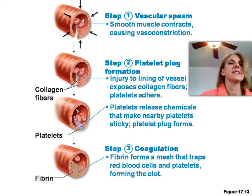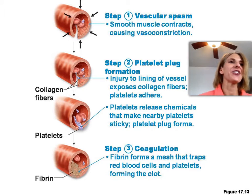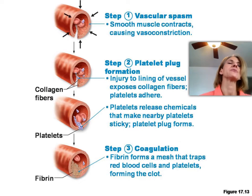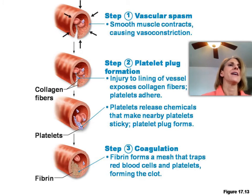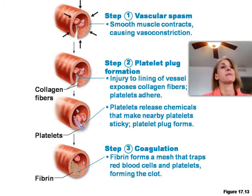Here are the phases: Step one, the vascular spasm — the blood vessel is spasming, causing vasoconstriction due to serotonin that trapped platelets produce. Then we start to attract more platelets. Serotonin is released, thromboplastin is released, ADP is released, and that attracts other platelets to the area. More platelets come, get trapped, release more chemicals, which attract more platelets — you can see it's a positive feedback loop.